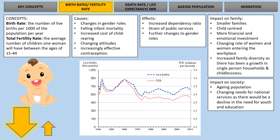The effects on society include an increase in the dependency ratio, which we'll discuss later. There's a greater strain on public services - the decline in children means less need for schools and health care services related to children, which can cause redundancies due to lack of need. We're also seeing continued changes to gender roles as women continue to enter the workforce. The impact on the family is that we have smaller, child-centred families where more time and emotional investment is put into kids. The changing role of women means more women re-enter the workplace after having children, creating greater gender equality - linking back to feminist perspectives on DDOL.